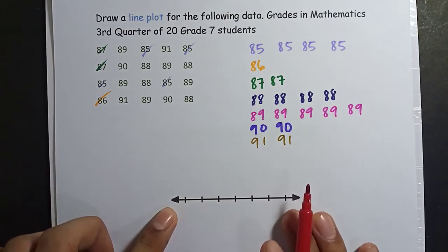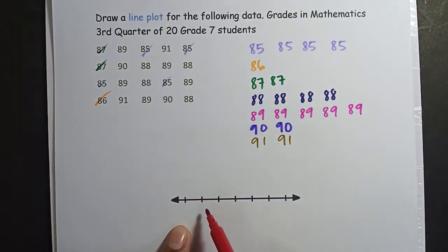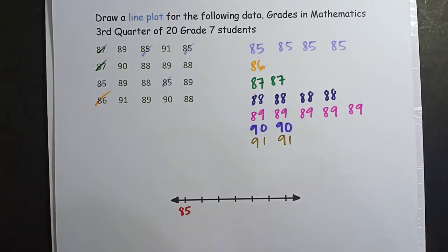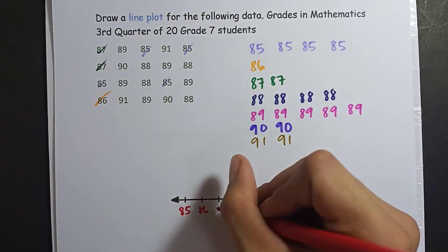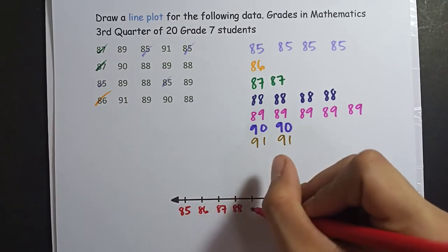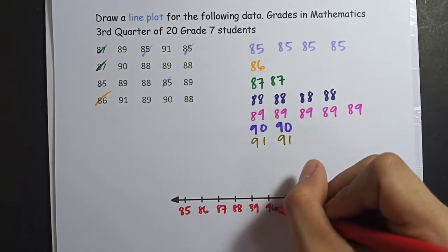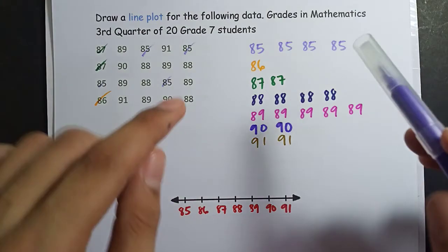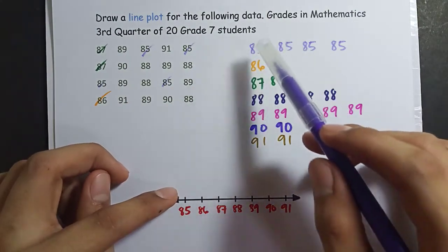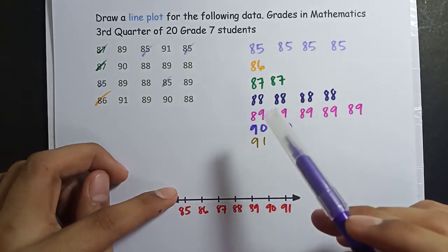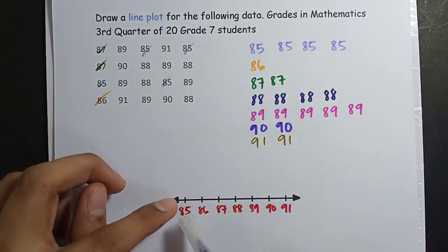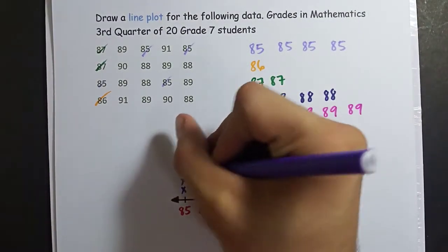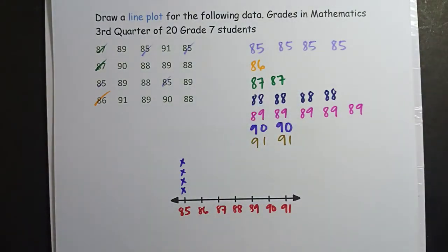How to do it? I have a line here and for each one of them I'll set a number. So this is the lowest which is 85. Next is 86, 87, 88, 89, 90, 91. Now, in every point, I'll match it with an X mark. So at 85, how many do we have? 1, 2, 3, 4. So four X's. 1, 2, 3, 4.